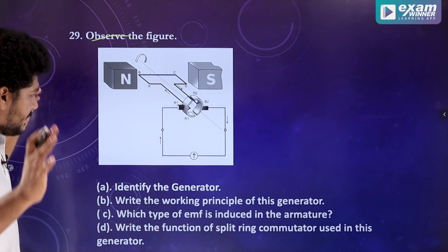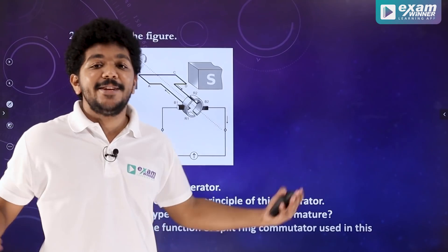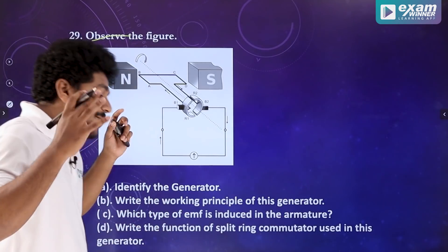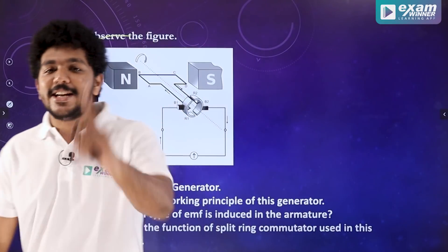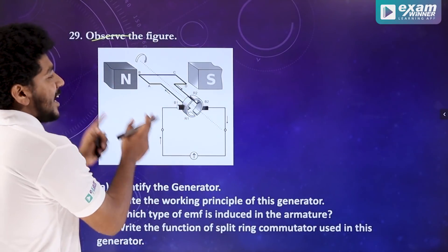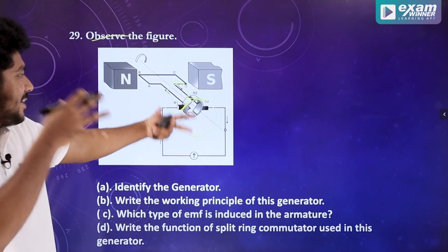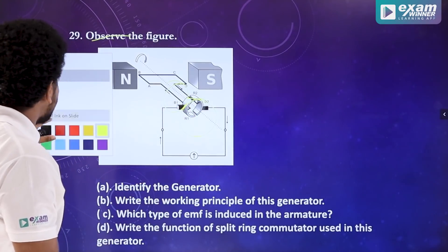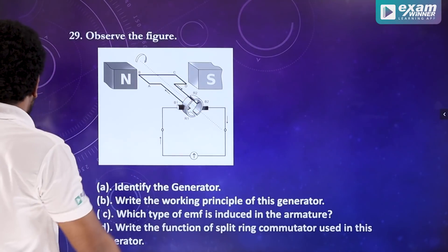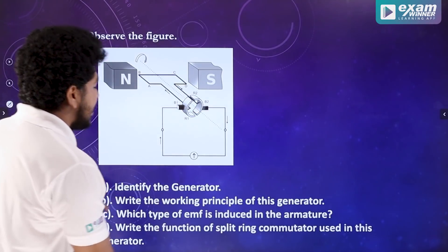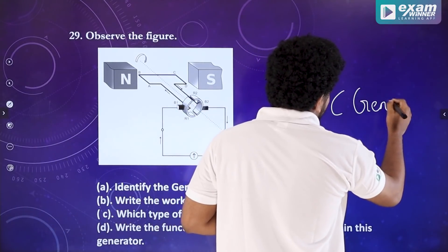Observe the figure. Identify the generator. The difference between AC generator and DC generator: the AC generator has two slip rings, while the DC generator has a split ring commutator. This generator has a split ring, so this is the DC generator.